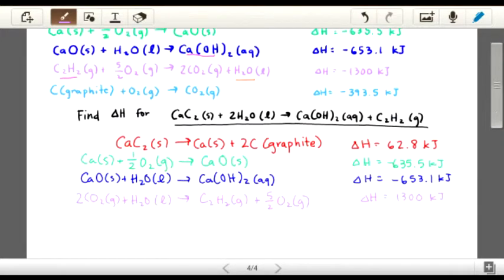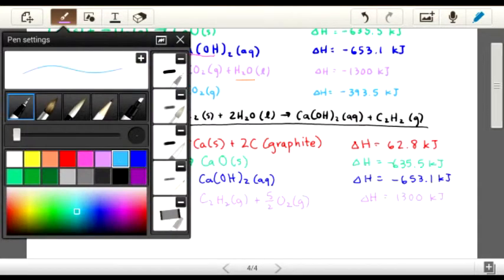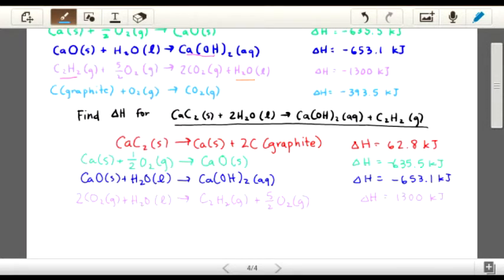In our last light blue equation, we see that graphite is on the left side, but the thing is that our 2C graphite on the right side of the red equation right here needs to cancel because it's not in our original equation that we're trying to find the enthalpy for. So what we're going to have to do is multiply through this last light blue equation by 2, so that it'll be able to cancel out with the red equation. So everything is going to be multiplied by 2, and the enthalpy change is also going to be multiplied by 2, so it's actually negative 787 kilojoules.